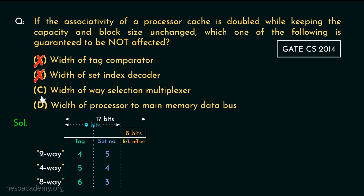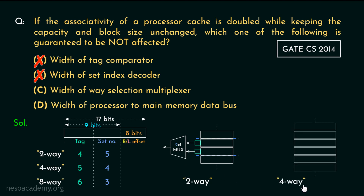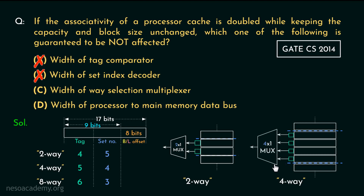Now let's observe option C: the width of the way selection multiplexer. In case of a 2-way set associative cache, the set size is 2, meaning every set has 2 lines. Suppose only one tag bit is associated with each of the lines — in that case we will be needing a 2-to-1 multiplexer. In case of a 4-way set associative cache, every set will have 4 different lines, and we will be needing a 4-to-1 multiplexer. Therefore with the increasing number of ways, the way selection multiplexer will be affected. So option C cannot be our choice either.